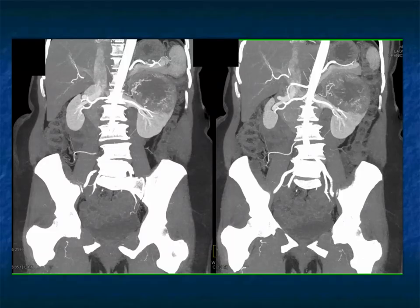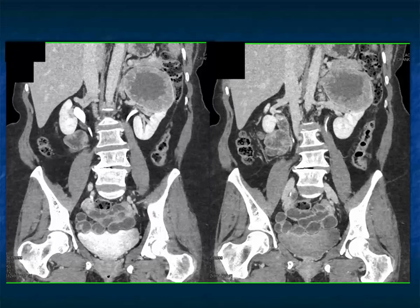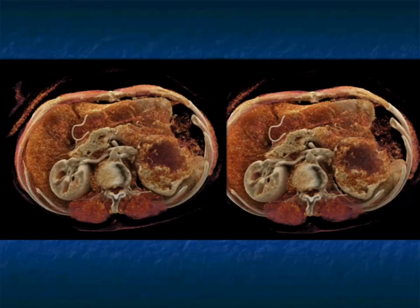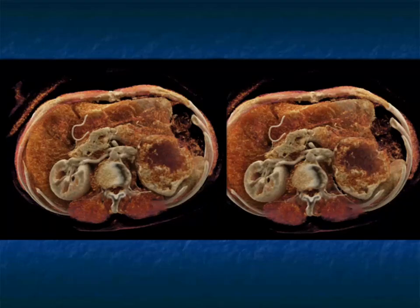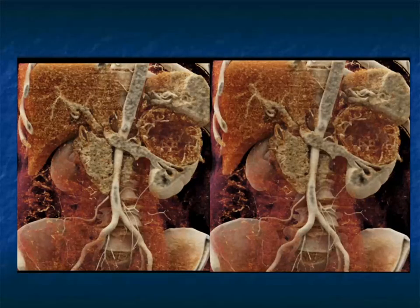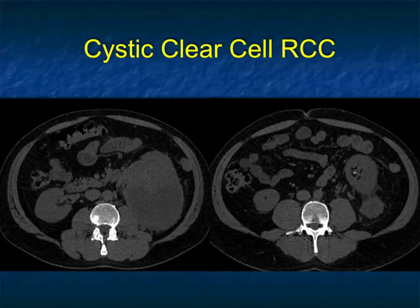We're trying to figure out ways of better quantifying the degree of necrosis — how to measure it, what phase to use, and how to make it consistent. On the excretory phase, you can very nicely see the central necrosis, the thickened tumor wall, and some residual neovascularity. Cinematic rendering is much better in our experience because it does texture mapping, which can create volumes of areas of necrosis, and show its relationship to the renal vein and renal artery.